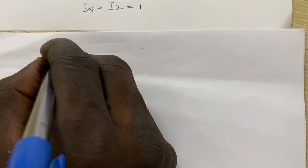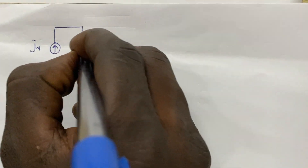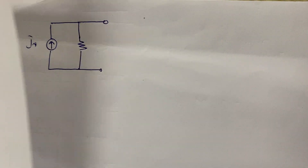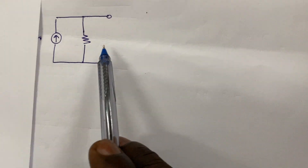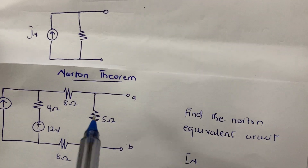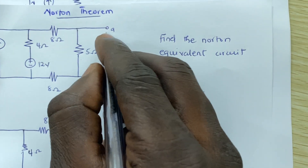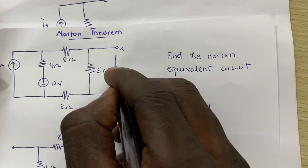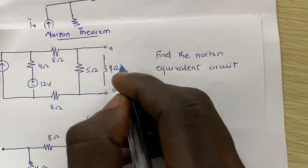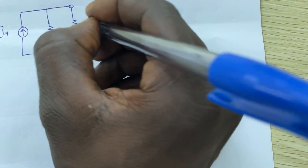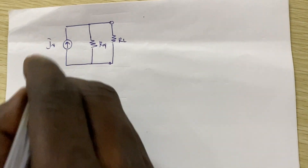The Norton equivalent circuit has our current source In in parallel with Rn, the Norton resistance. This time the load resistance is also in parallel. If, for example, the load resistance RL is 4 ohms, we place it in parallel with Rn of 4 ohms, and In of 1 amp flows into this circuit.